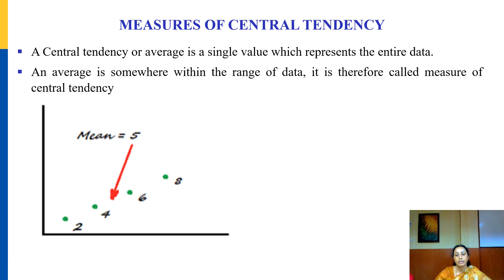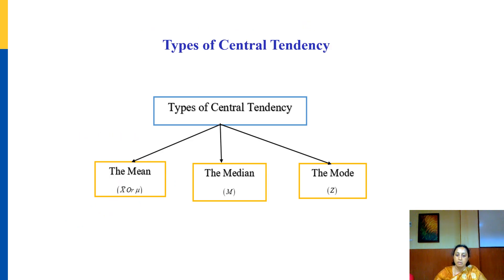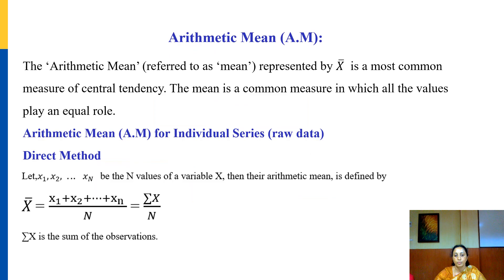The average is somewhere within the range of data, which is why it is called a measure of central tendency. There are three major measures of central tendency: the mean (arithmetic mean), the median, and the mode. Now let us see how we can find the arithmetic mean for individual or raw data.